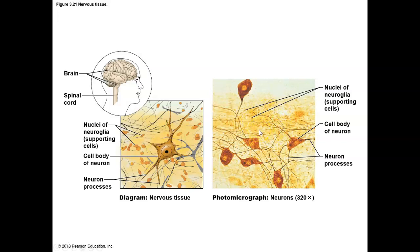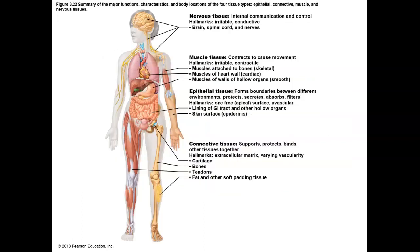Neuroglial cells outnumber neurons, but they function in support of the nervous system and those neurons. We find nervous tissue in the brain, spinal cord, and in the ganglion. Neurons themselves are not able to regenerate or undergo mitosis in general, though there are some specific exceptions we'll talk about in the nervous system chapters. Neuroglial cells, on the other hand, are highly regenerative and can replicate. Here we have examples of the different tissues, their basic functions, and where they're located throughout the body.